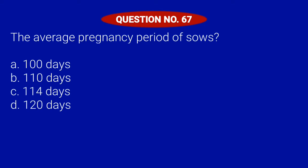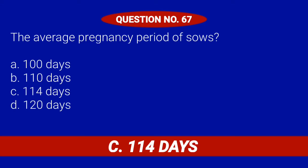Question number 67. The average pregnancy period of sows. Letter A: 100 days. Letter B: 110 days. Letter C: 114 days. Or Letter D: 120 days. Correct answer is Letter C: 114 days.